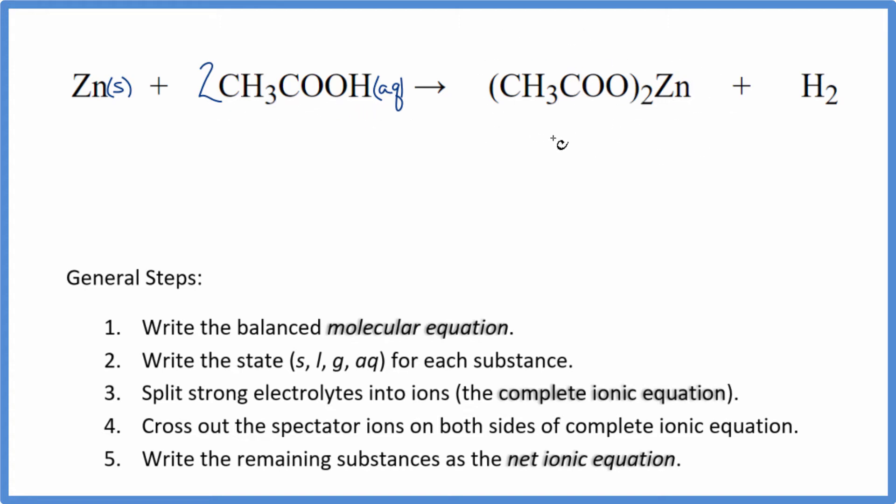This right here, the acetate ion, when you have CH3COO bonded to a metal, acetates, if you know your solubility rules, are very soluble. So this is going to dissolve in water, dissociate into its ions. Hydrogen, that's a gas. So we just write g there. These are the states for our net ionic equation.